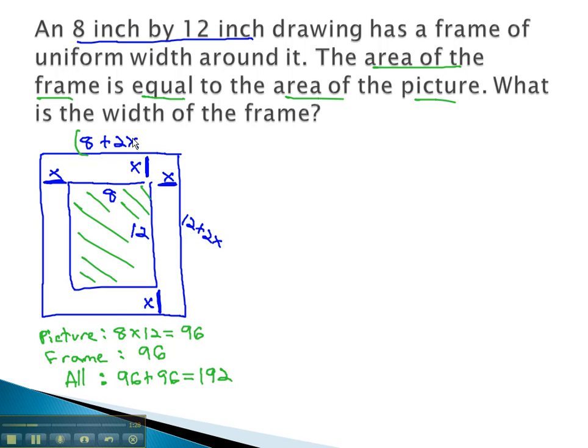The total area, when we multiply the width by the length, should equal that area of 192. 8 plus 2x, times 12 plus 2x, equals the 192.